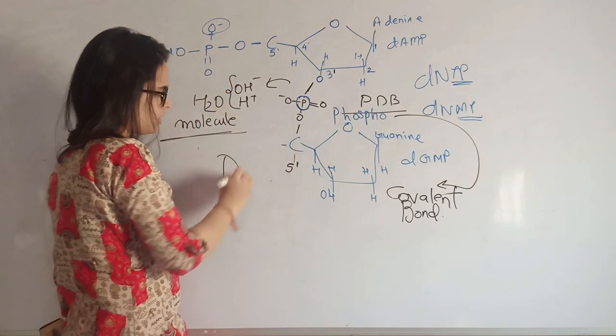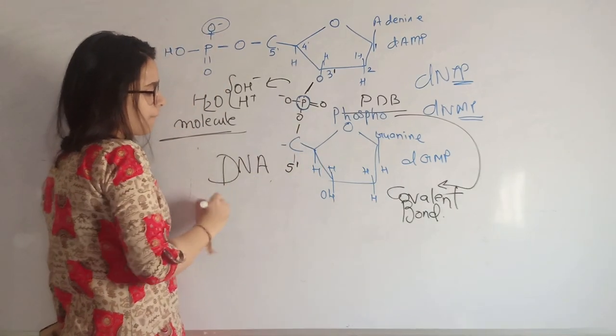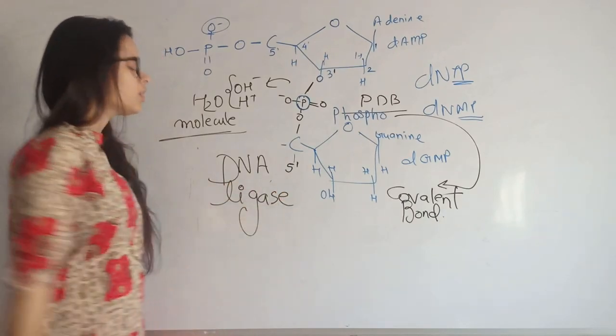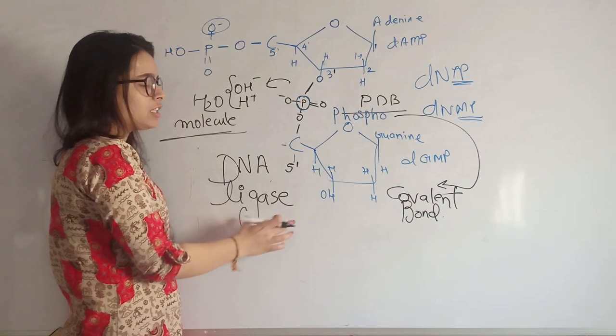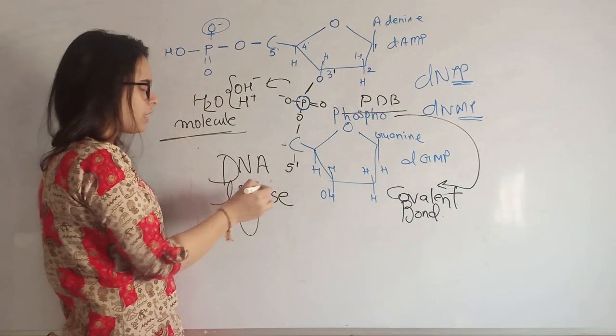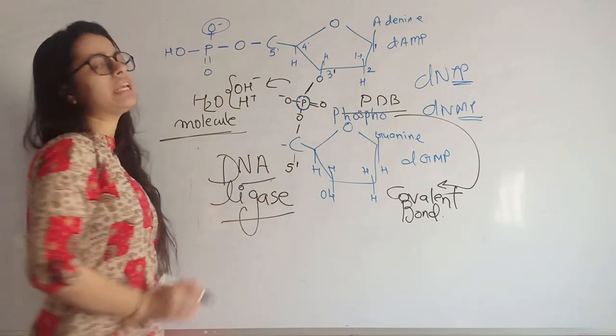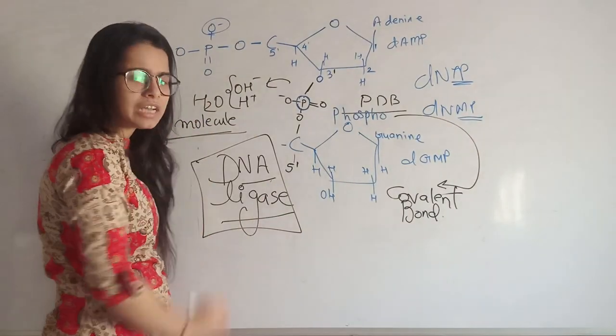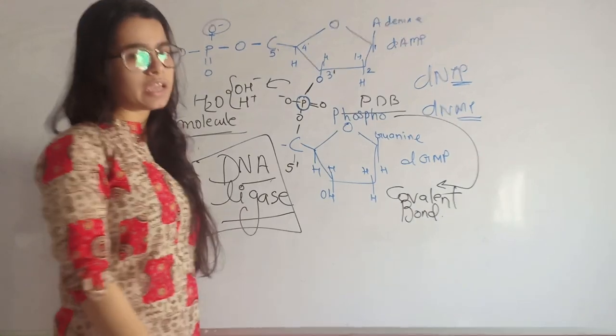Here, which enzyme we are taking is DNA ligase. We are ligating DNA, that's why the enzyme is named as DNA ligase. It is not so that only this enzyme forms phosphodiester bond. There are other enzymes which also form phosphodiester bond, which are named as DNA polymerase or RNA polymerase.